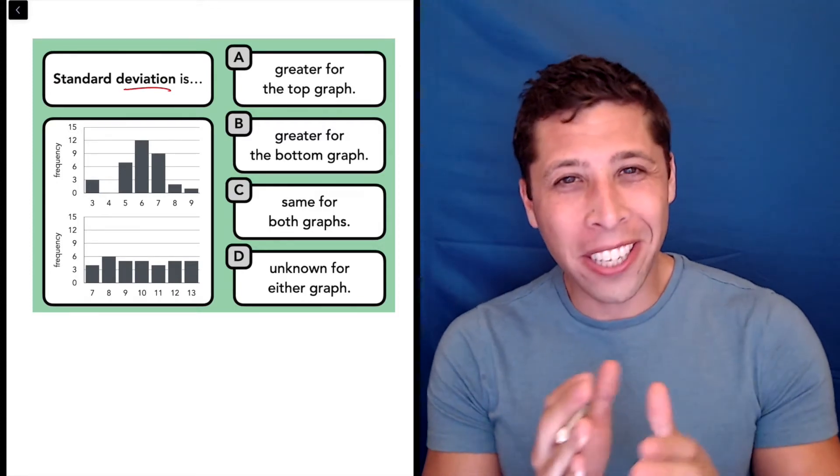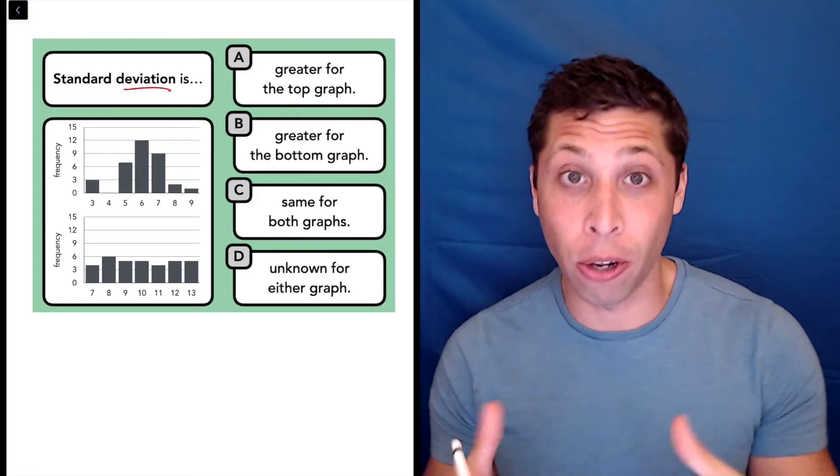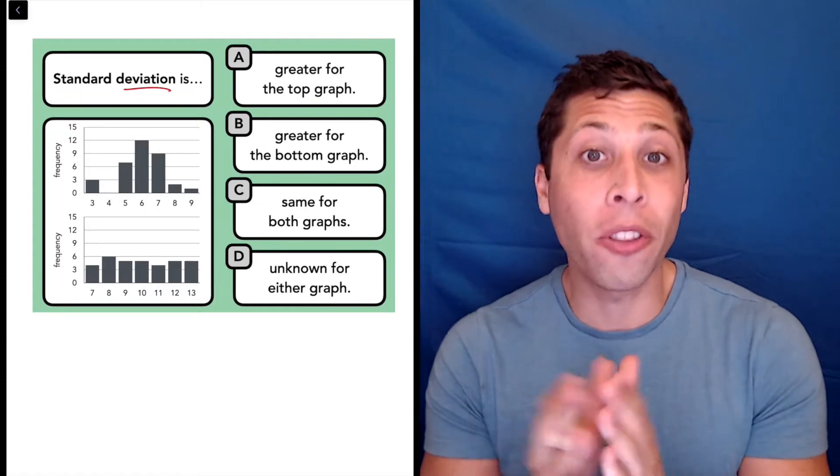So what is the path for a set of data? Well, the path is going to be kind of like the middle, the average, the place where all the data seems to be going.